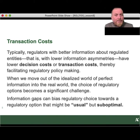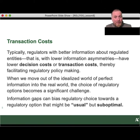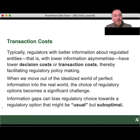Information has a very important impact on transaction costs — the costs to bring something into effect. Regulators with better information about regulated entities, that is, with lower information asymmetries, have lower decision costs or transaction costs, thereby facilitating regulatory policymaking. The transaction costs in convincing people that the regulation is the right direction go way down when the quality of your information is good. When your information is not comprehensive or convincing enough, you're battling in the media, your transaction costs go through the roof, and those can be very expensive.